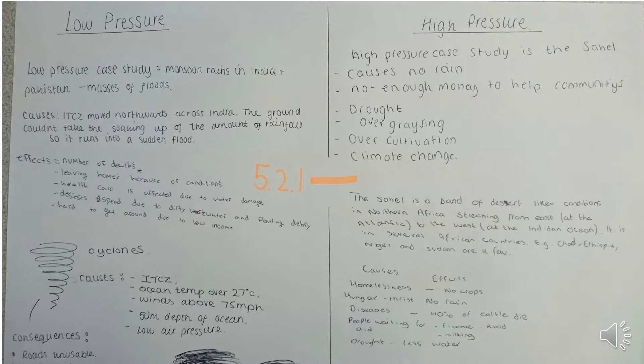Wherever you get the ITCZ, you get low pressure. Low pressure brings rainfall because the sun shining directly overhead makes water at the surface of the sea evaporate, and that evaporating water is forced to rise — it cools, condenses, forms clouds, and rainfall ensues.